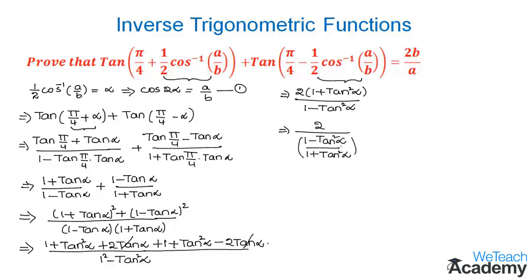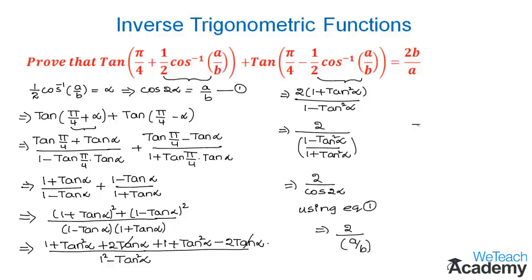This expression (1 − tan²α)/(1 + tan²α) is the multiple angle formula for cos 2α. So writing that, we get 2 / cos 2α. Using equation 1, cos 2α = a/b, so substituting gives 2 / (a/b), and taking the reciprocal we get 2 × (b/a) = 2b/a.